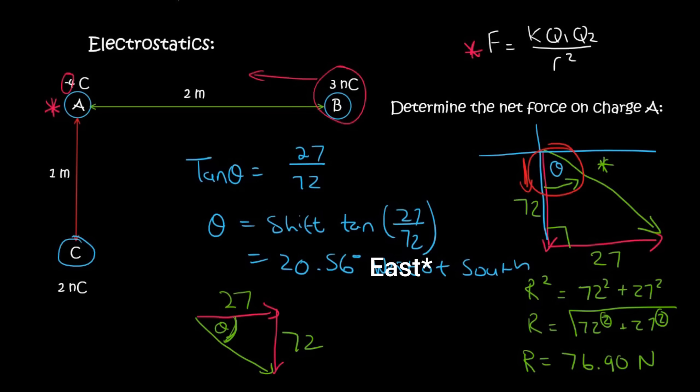And then you would have found this angle over here. And it would have been different. So you would have said tan theta is equal to opposite, which is now 72 over 27. And that's going to be shift tan of 72 over 27. And that gives you 69.44 degrees.